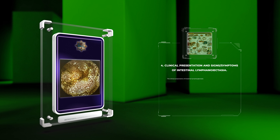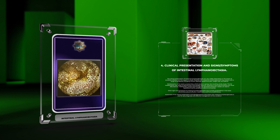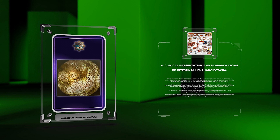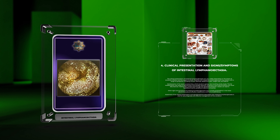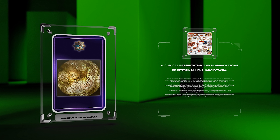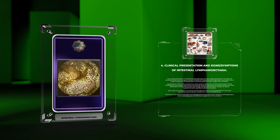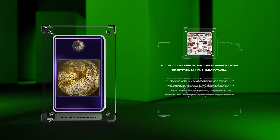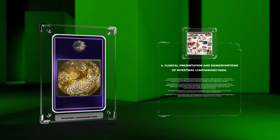The clinical presentation of intestinal lymphangiectasia can vary widely depending on the extent of lymphatic dilation and the organs involved. Patients may present with a range of symptoms including chronic diarrhea, abdominal pain, weight loss, and edema. Malabsorption of fat leads to steatorrhea, resulting in greasy, foul-smelling, bulky stools.